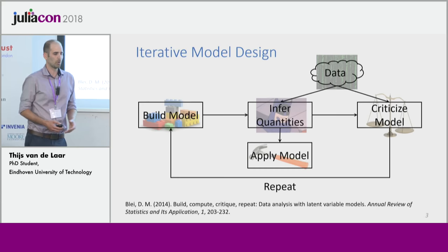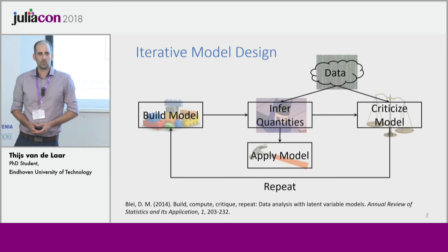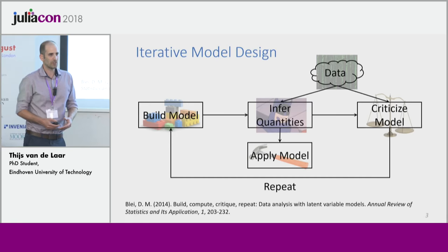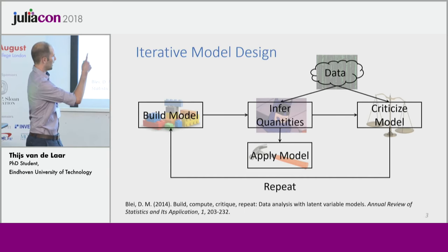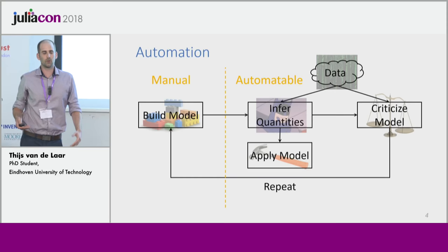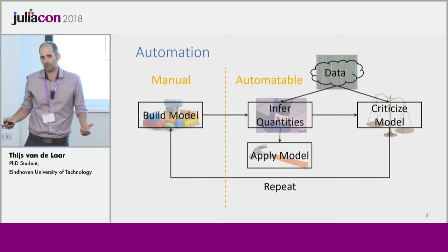We might be done and apply that, or we might go a step further and be interested in how well we are doing. So we want to criticize our model and come up with a measure for the performance. Based on that we may repeat the process all over again — we revise the model a little bit and go through this loop again and again. The left hand side of this loop is by definition human work; to come up with a new model is a creative process. But everything on the right hand side can be automated.